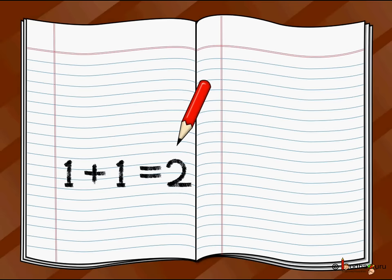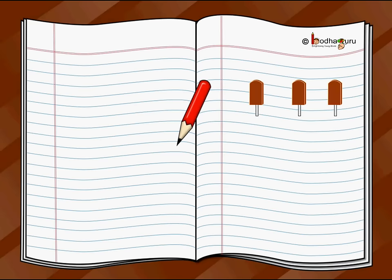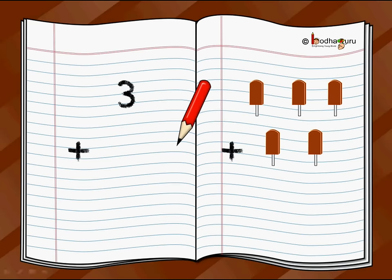Let's take another example. Let's say I have three ice creams: one, two, three. So on the left hand side I will write three. And then I got two more ice creams — one and two. So we write three ice creams I had initially plus two more ice creams.